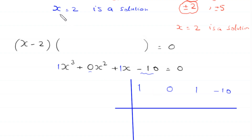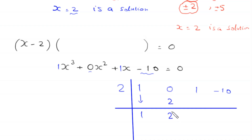We use synthetic division to find the other factor of this polynomial. Since we know that x equals 2 is a solution, we write here 2. We bring down this 1 as it is. Then we multiply this 1 by 2, getting 2, and write it here, and add: 0 plus 2 is 2. Again, we multiply this 2 by 2, getting 4, write it here, and add: 1 plus 4 is 5. Now we multiply this 5 by 2, getting 10, write it here, and add: negative 10 plus 10 is equal to 0.